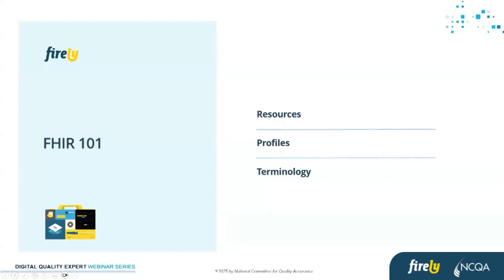The last building block — probably most important to quality reporting and interoperability — is terminology. This is where you restrict the data to certain value sets and coding systems that each side can understand: what diagnosis code was used, what lab test was performed. For quality reporting, if we want to confirm that a patient over 50 had a colonoscopy, we need the same terminology and coding sets behind that. It could be the entire coding system, a small value set, or a subset — those are the building blocks of what a FHIR resource is.